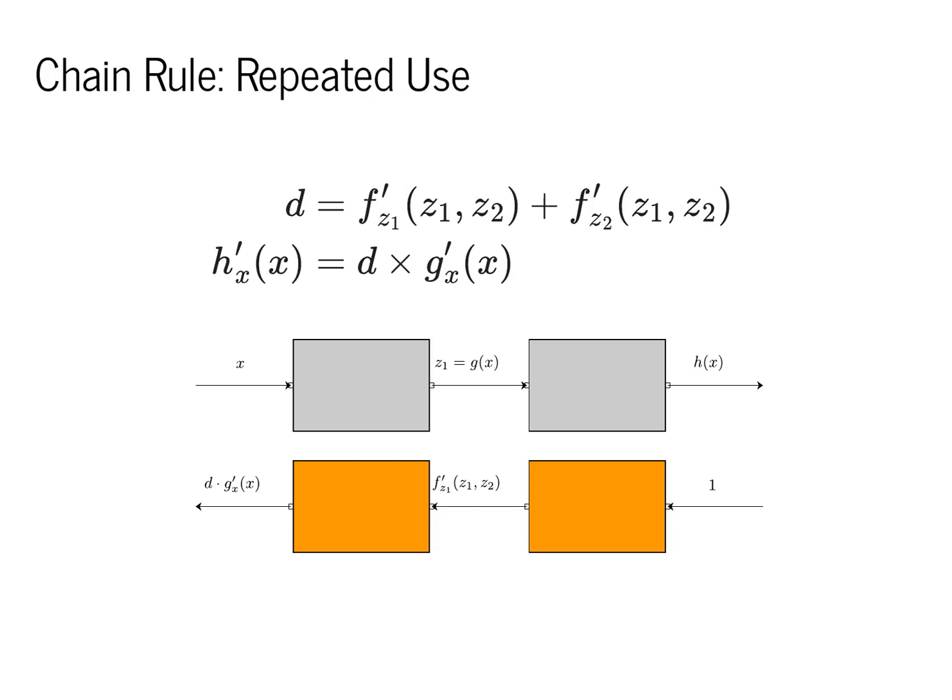If a variable is used multiple times, the derivative that it backpropagates is the sum of all of the derivatives that reach that middle point. Here we are computing z1 and z2 values in the middle, and we're adding up the values of the derivatives from the right-hand side.